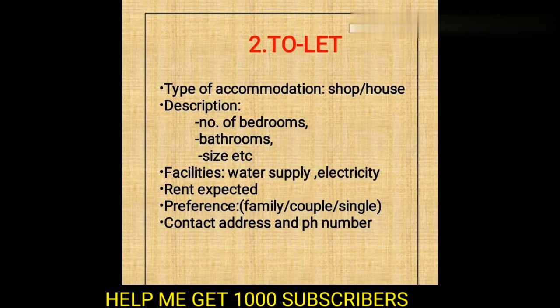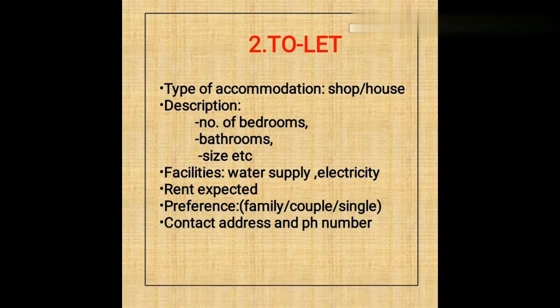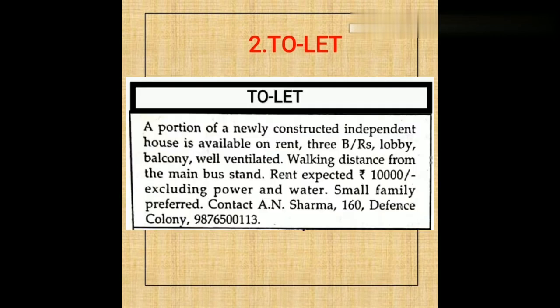The second category is 'To Let'. At the top, you have to write 'To Let' and then mention whether it is a shop or a house. Then include the description, number of bathrooms, number of bedrooms, size of the accommodation, facilities, rent expected, preferences, contact address, and phone number.